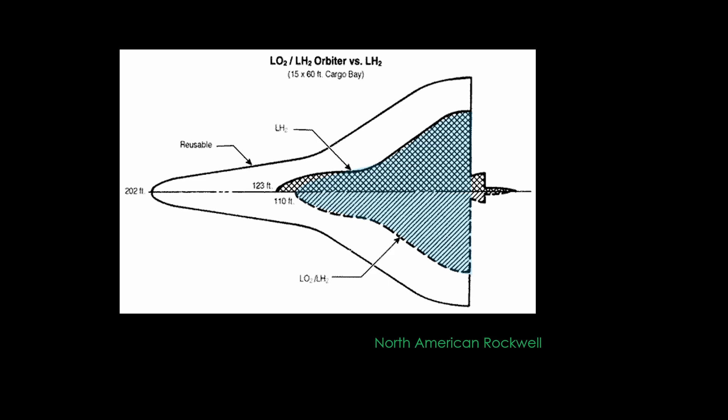NASA had a very limited budget for shuttle, so they chose the external tank, giving up their dream of a fully reusable system.